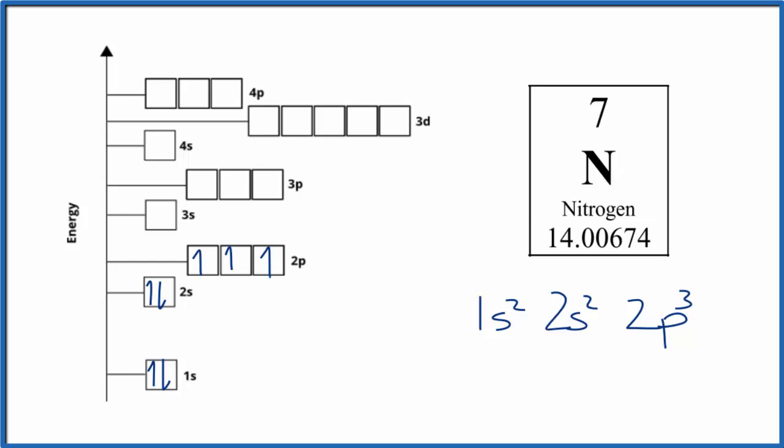Sometimes you'll see it written like this. It's the same thing, this is just in a more horizontal fashion. So we have 1s², 2s², and then 2p³. And that's another way we can represent where those electrons are around the nucleus of the nitrogen atom.